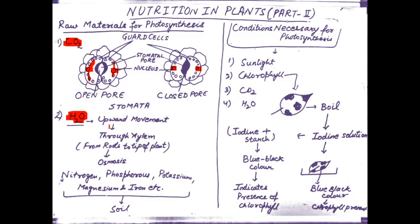The second requirement is water. As mentioned, there is xylem inside the vascular tissue. There are two types of tissue: xylem and phloem. Xylem is responsible for water conduction — it is also known as the water conducting tissue. It takes up water from the root of the plant to the tip by the process of osmosis. Osmosis is the movement of solvent from higher concentration to lower concentration.